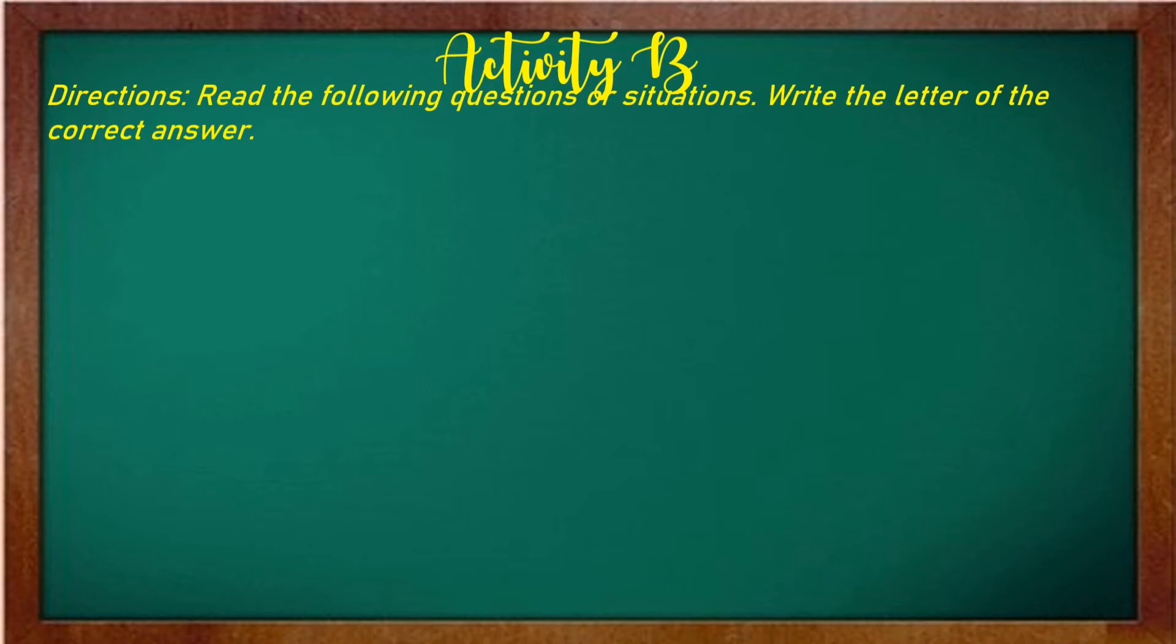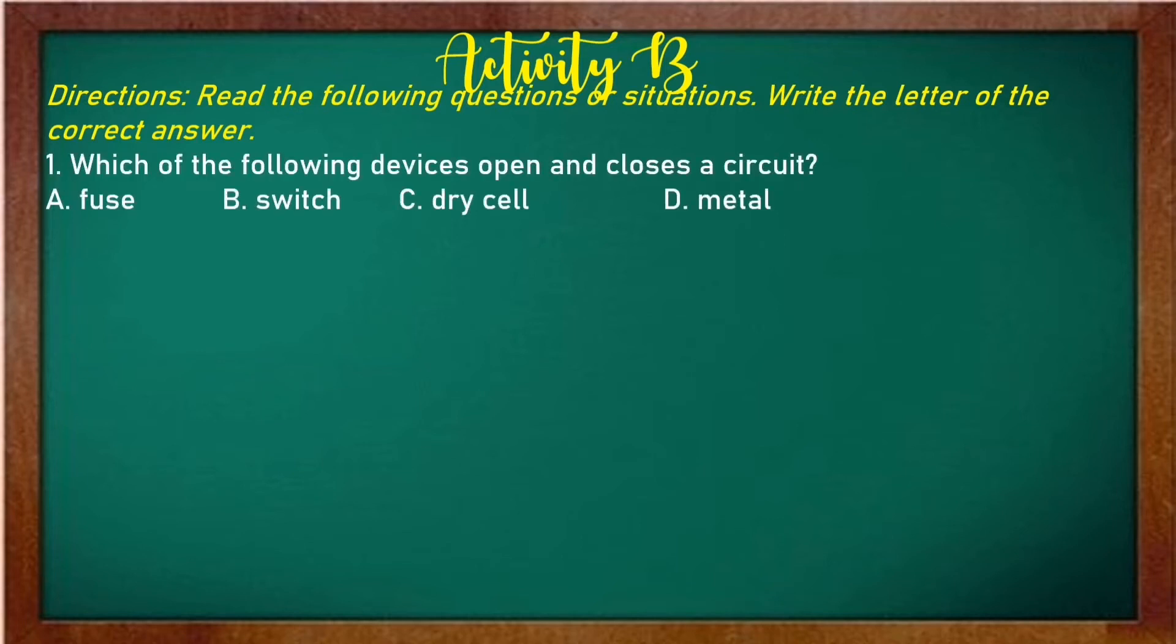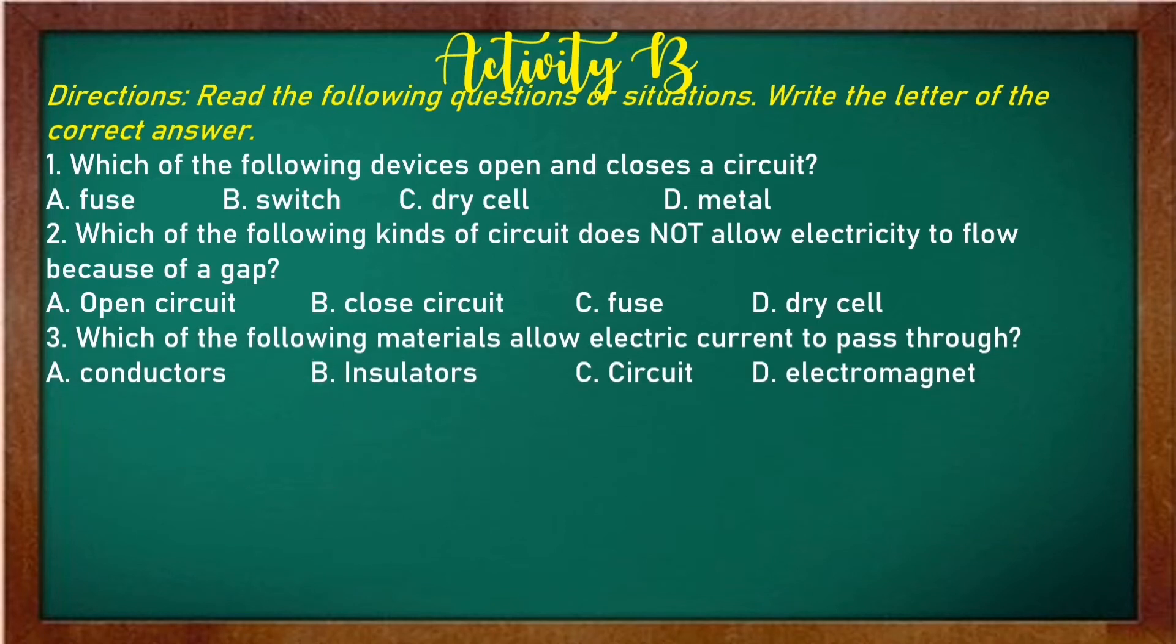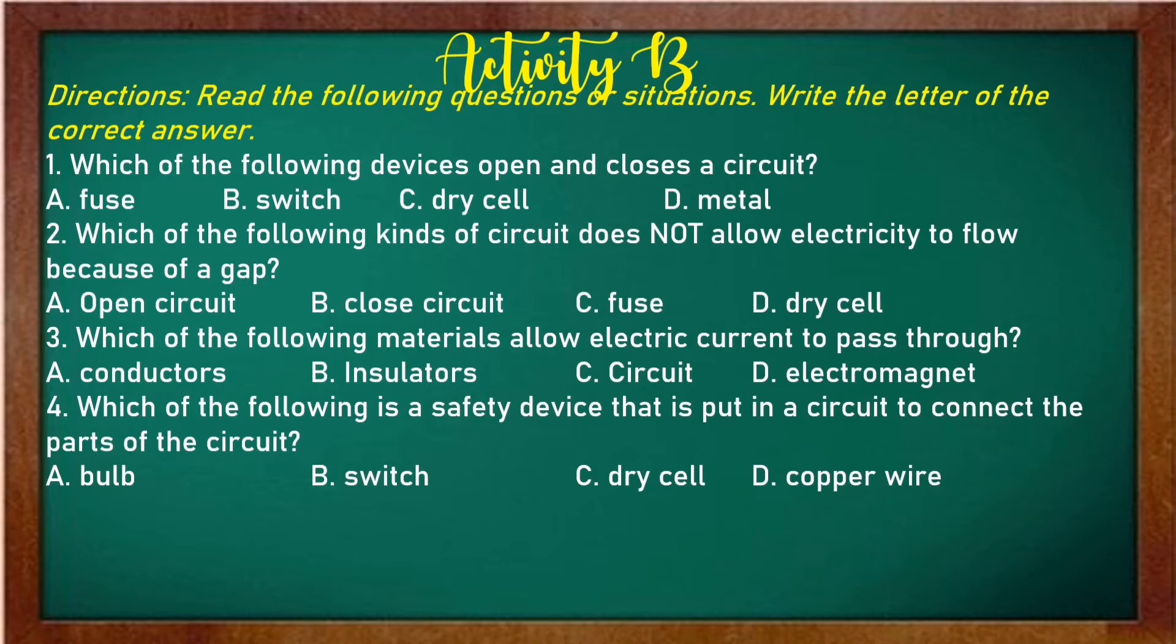Let's proceed to activity B. Read the following questions or situations. Write the letter of the correct answer. Do this in your notebooks. Number one, which of the following devices open and closes a circuit? A fuse, B switch, C dry cell, D metal. Number two, which of the following kinds of circuit does not allow electricity to flow because of a gap? A open circuit, B closed circuit, C fuse, D dry cell. Number three, which of the following materials allow electric current to pass through? A conductors, B insulators, C circuit, D electromagnet. Number four, which of the following is a safety device that is put in a circuit to connect the parts of the circuit? A bulb, B switch, C dry cell, D copper wire.